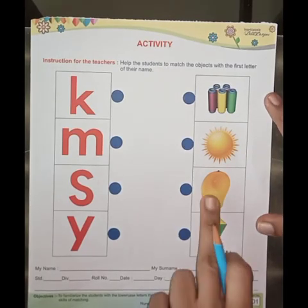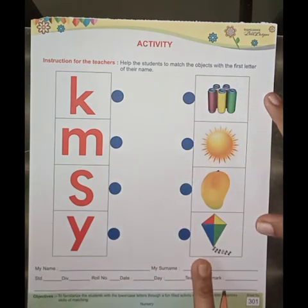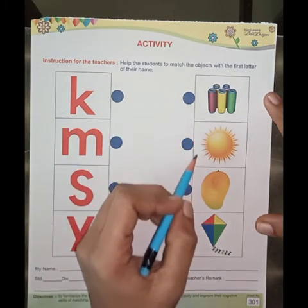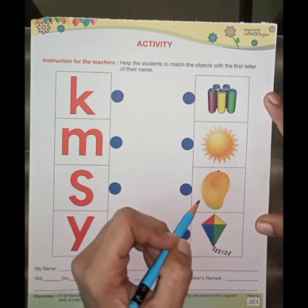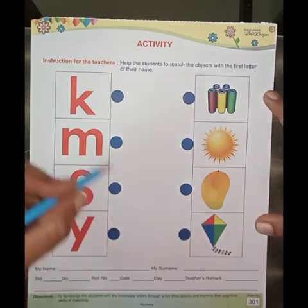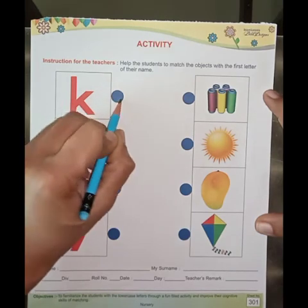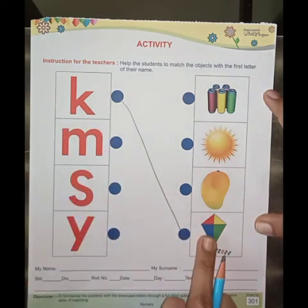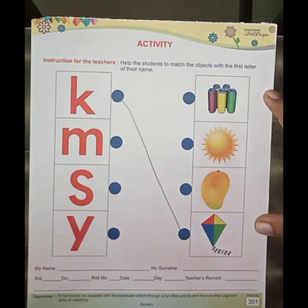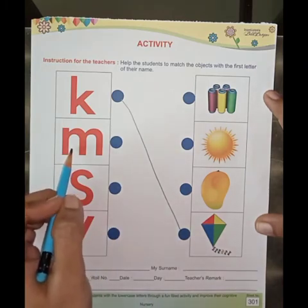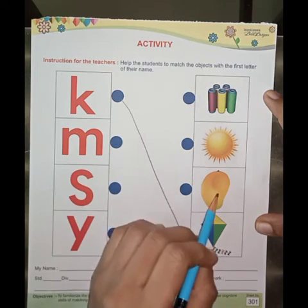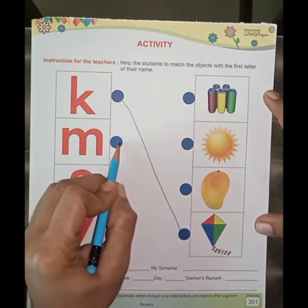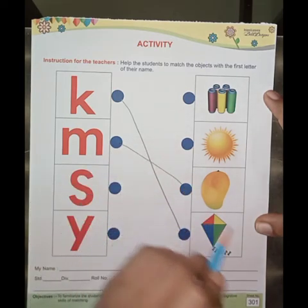So now we will match each letter with the related object. This is the letter K — K for Kite. Keep the pencil over here, take it down, and match K for Kite. Now this is the letter M — M for Mango. Keep a pencil over here and match M for Mango.